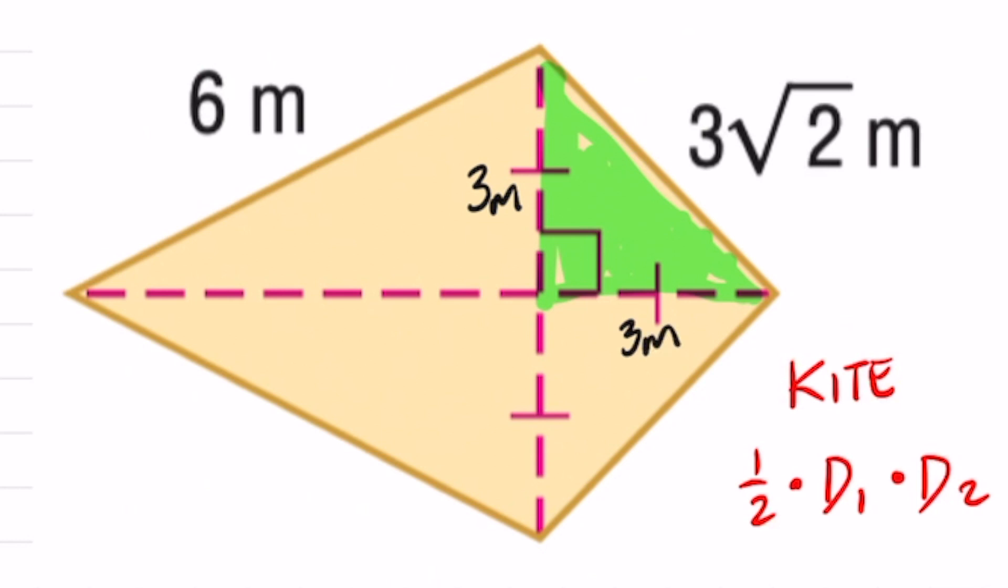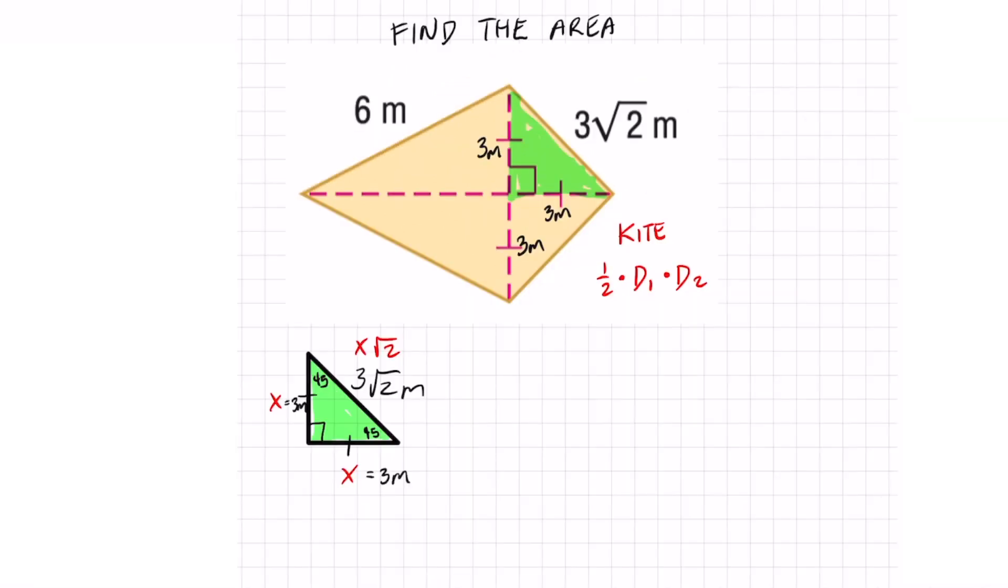So now we can label that in our main shape above. Three meters, three meters, and this one's three meters. So why does that help us? Well, we can just add these two up later and we'll get one of the diagonals. But now I need to focus on this side right here so I can get the second diagonal.